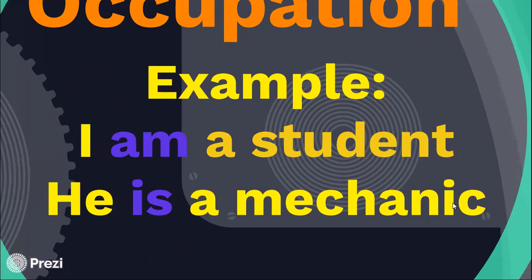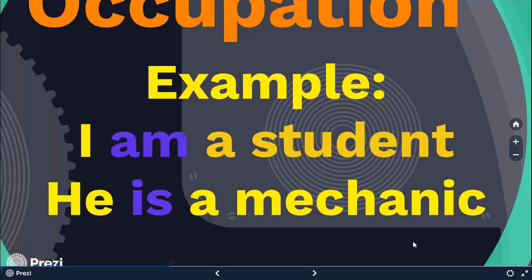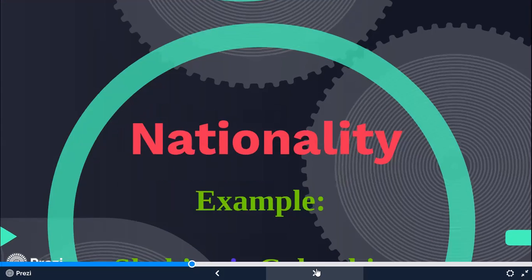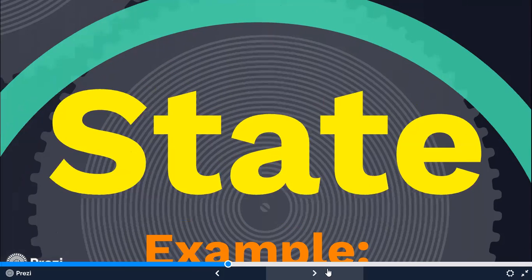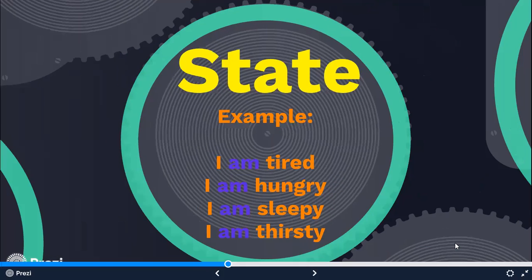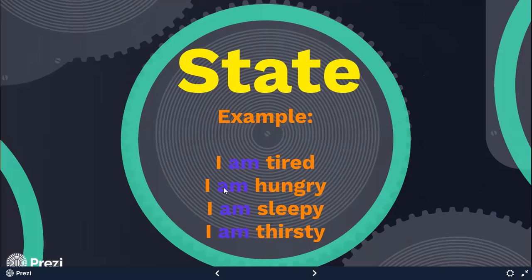Then we also use verb be to talk about occupation. For example: 'I am a student. He is a mechanic.' We use the verb be to indicate occupation. We also use verb be for state — estado. State puede significar un estado como el estado de México, pero también significa un estado en el que te encuentras en este momento. Por ejemplo: I am tired. I am hungry. I am sleepy. I am thirsty.